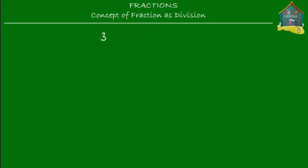Welcome to homecampus.com.sg. In this lesson I'll show you how fraction and division are related to each other. So if I have something like 3 divided by 4, then this is the same as the fraction 3 fourths or 3 quarters. We're going to see how 3 divided by 4 is equal to the fraction 3 upon 4, and vice versa — this fraction 3 fourths is the same as saying 3 is divided by 4. Let's start from 3 divided by 4 and try to prove that this is equal to the fraction 3 quarters or 3 upon 4.